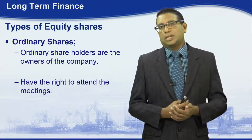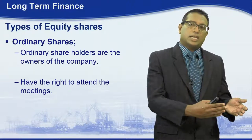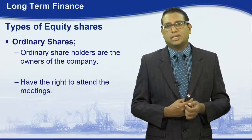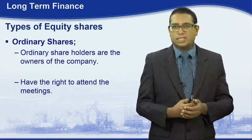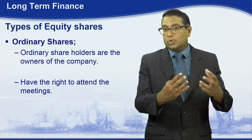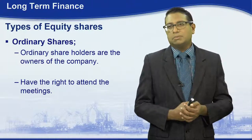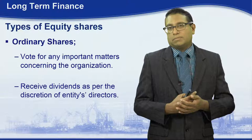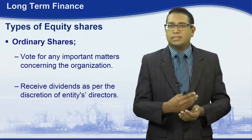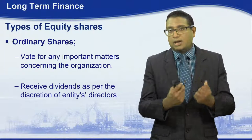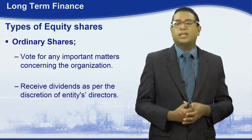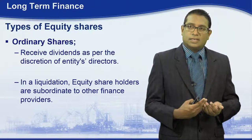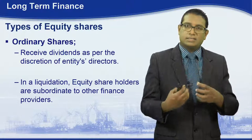The types of equity shares are ordinary shares and preference shares. Ordinary shareholders are the owners of the company. Being owners, they have the right to attend company meetings, especially the annual general meeting. Ordinary shareholders also have the right to vote on important matters concerning the organization, and they receive dividends as per the direction of the entity's board of directors.